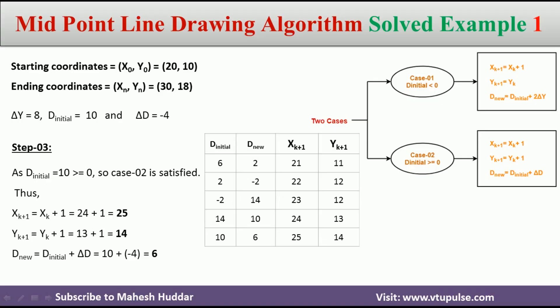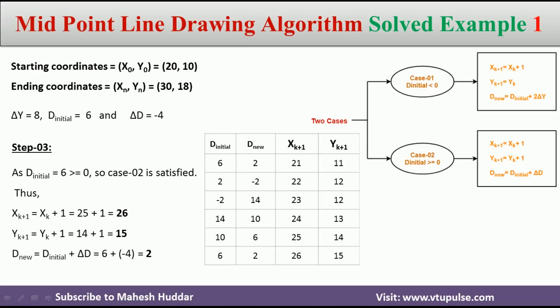6 becomes d_initial for the next iteration. Since 6 is greater than 0, we select case number 2 again and use those three equations to get the new point by adding 1 to xk and yk. We get xk+1 and yk+1 as (26, 15), and d_new equals d_initial plus delta_d, which is 2. Now 2 becomes d_initial for the next iteration. Using 2 as d_initial, we calculate the new point: d_new is minus 2 and the next point is obtained by adding 1 to xk and 1 to yk, giving us (27, 16).